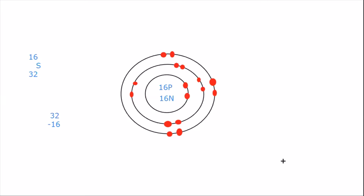Now we will look at the electron arrangement for atoms. The electron arrangement is a short way of showing how many electrons an atom has and how many electrons are in each shell, without having to draw all the circles. If we have a look at sulfur, we see that it has two electrons in its first shell. So what we do is we put two to show that in the first shell there are two, and then we write a comma. The comma means we're moving to the next shell. Because there's a comma, we are now looking at our second shell, and in our second shell we have eight electrons.